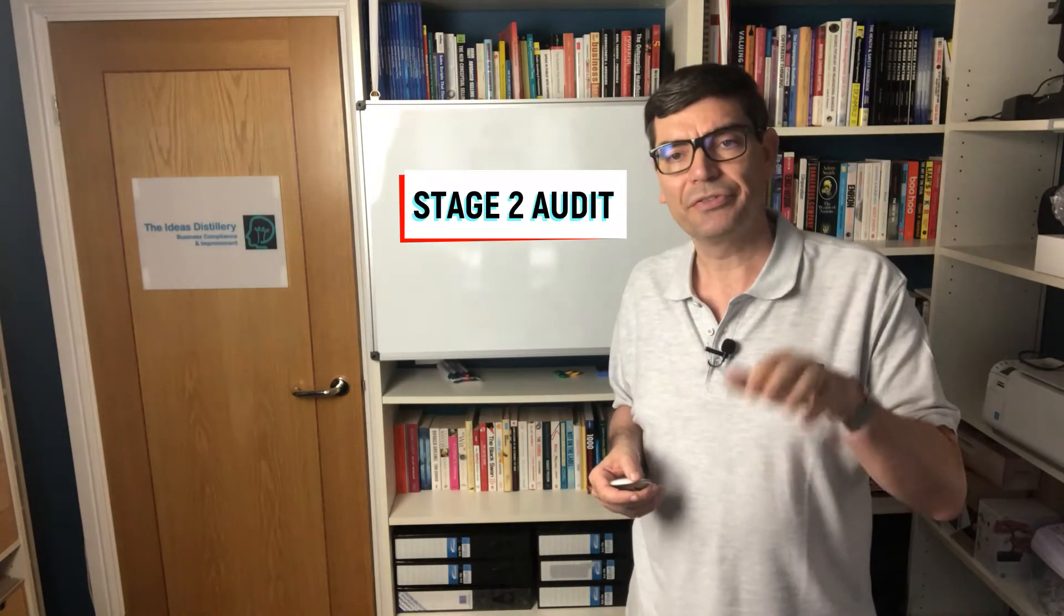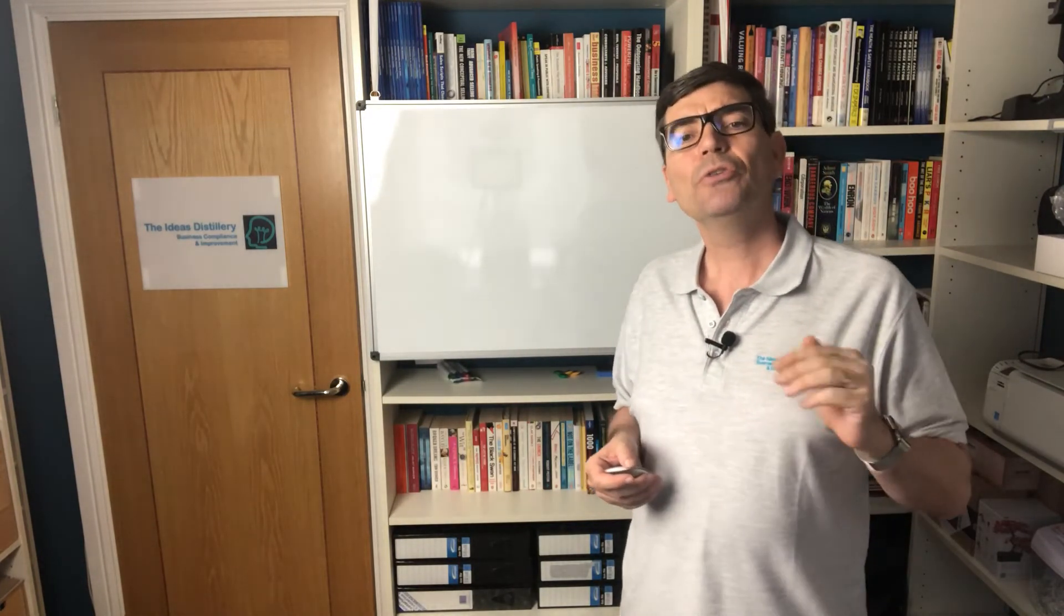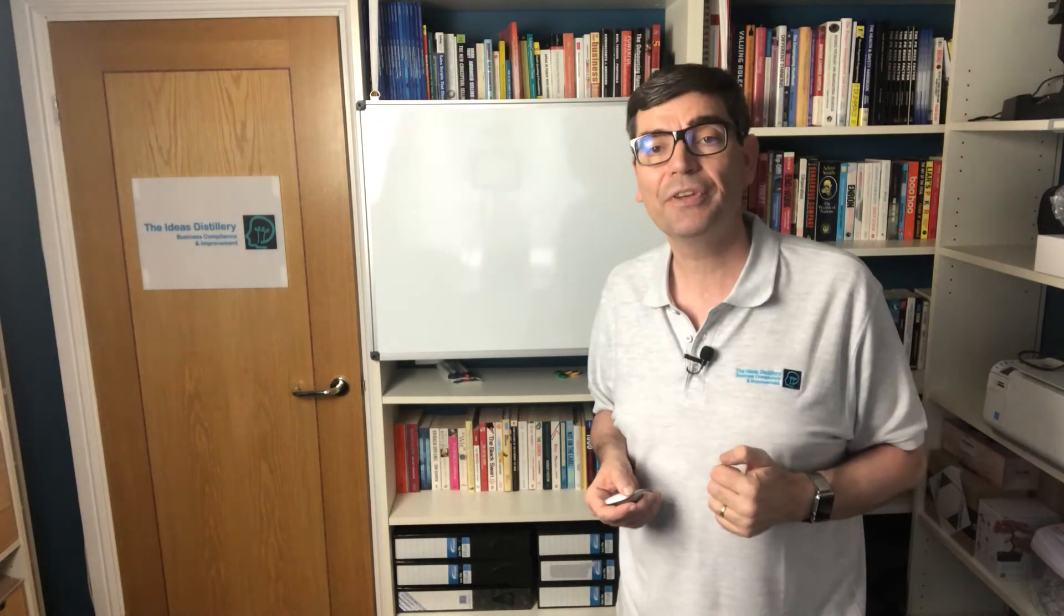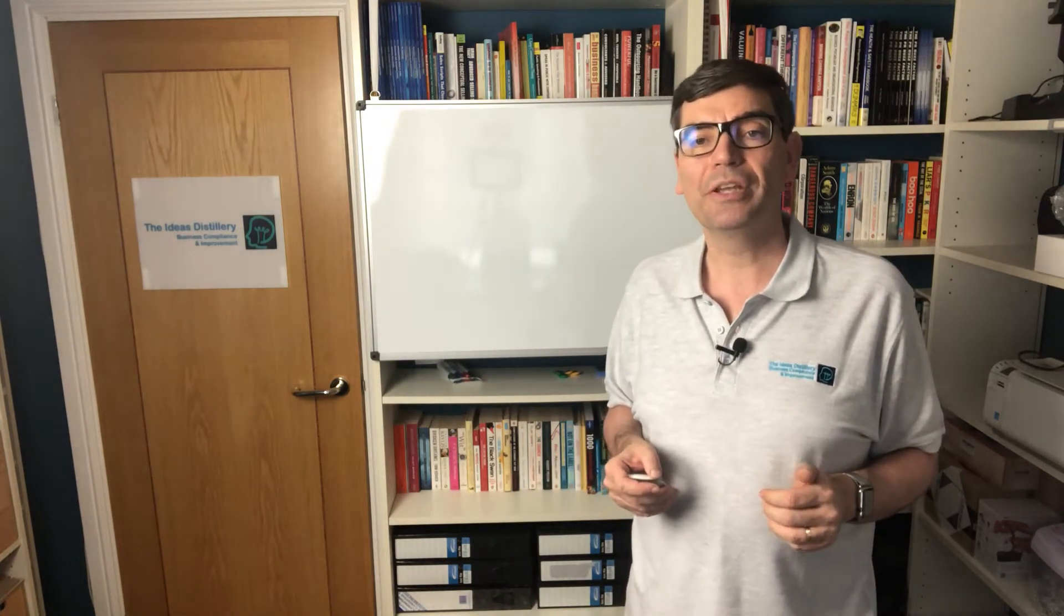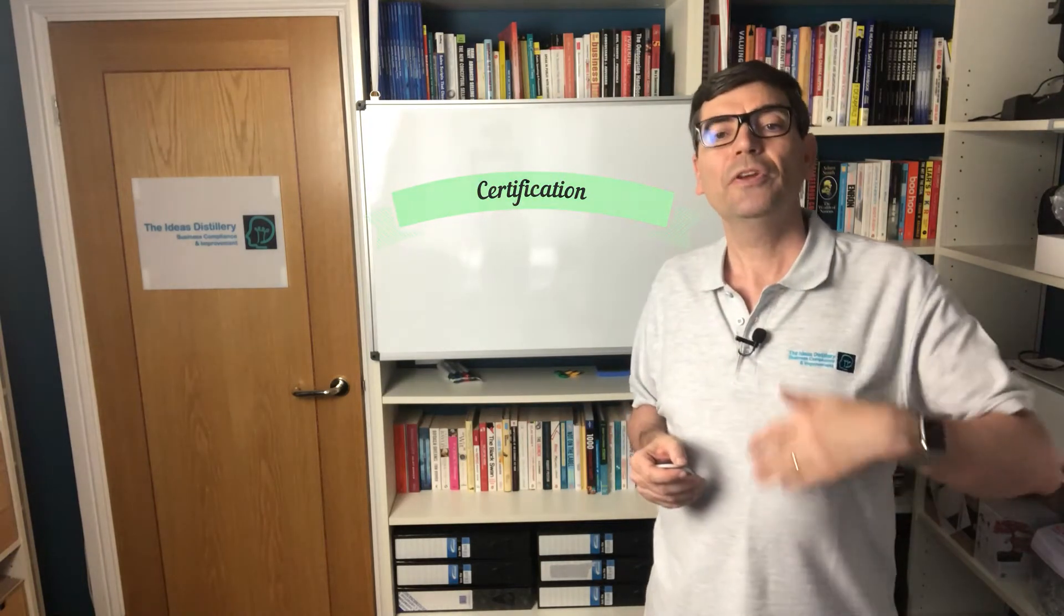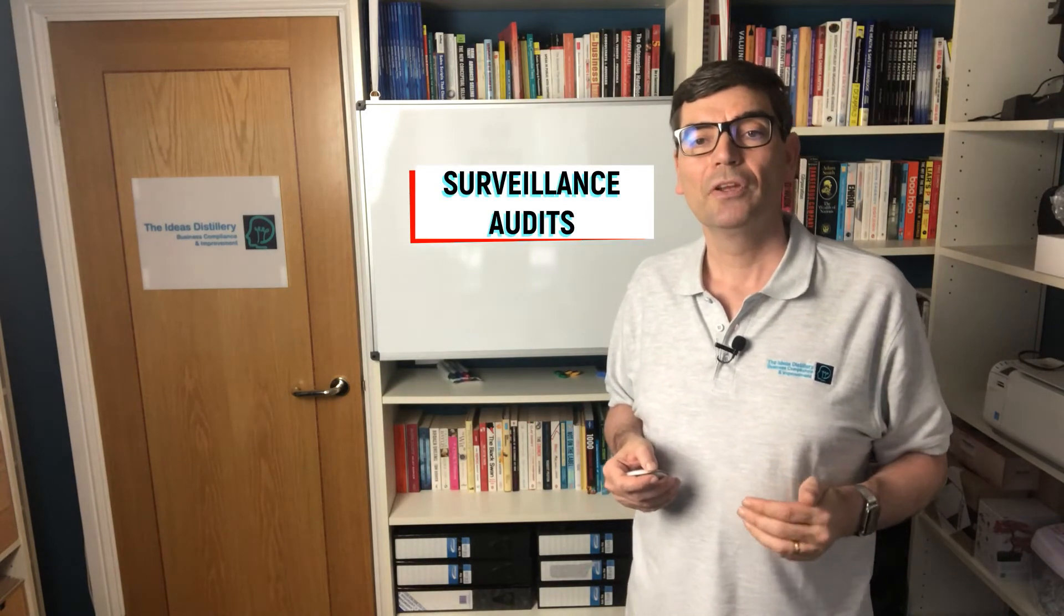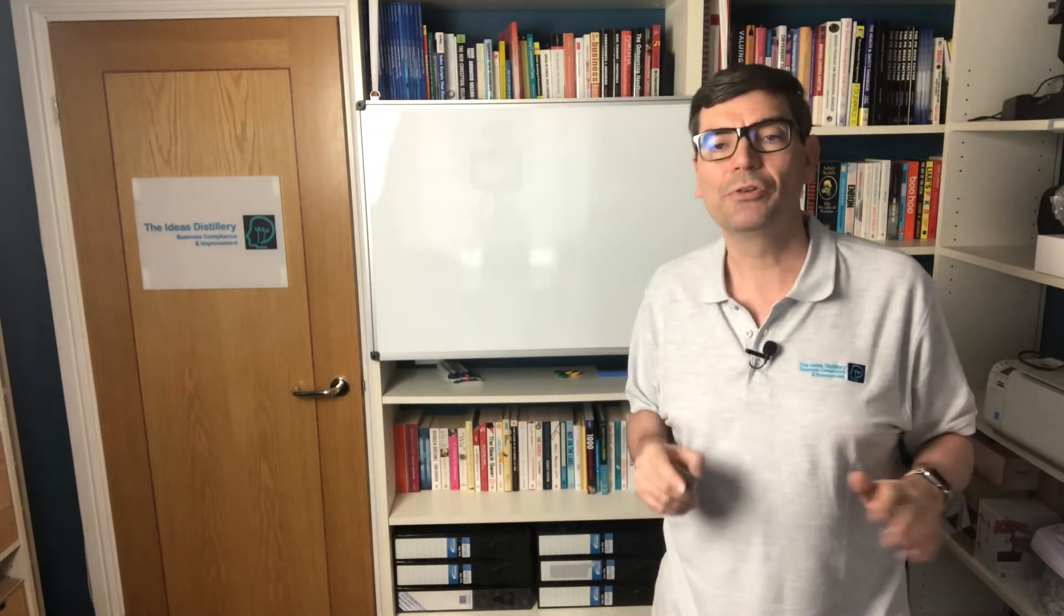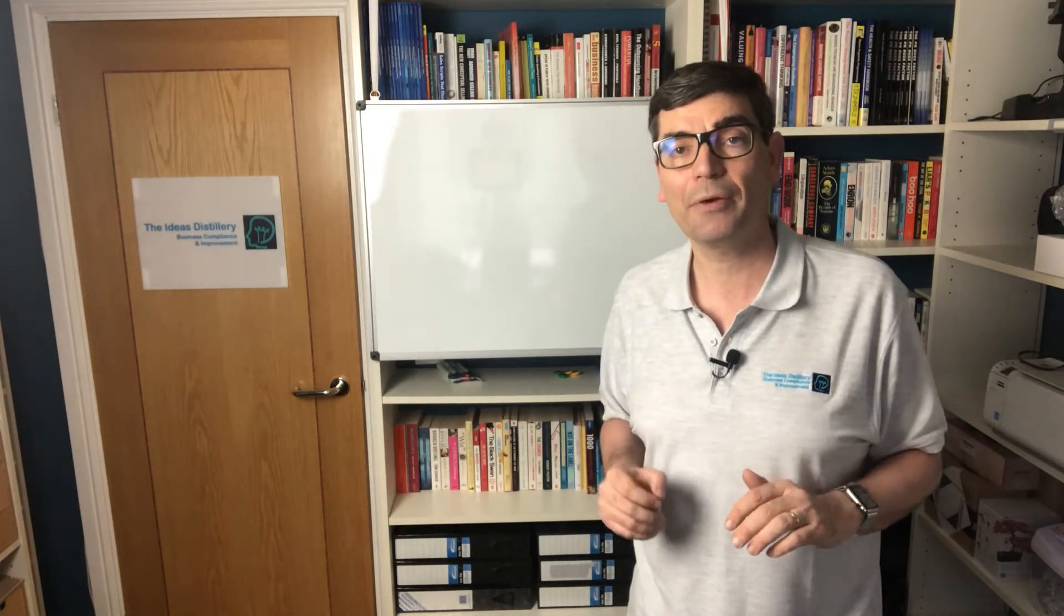Typically around 30 days later you will then have a stage two audit. This confirms that your processes and systems are free from non-conformities. Again, your auditor will evaluate your performance and efficiency and make the recommendations for certification. There may still be a need to address non-conformities following this audit but it's at this point you get your ISO certification. The following two years will see annual surveillance audits by the certification body.